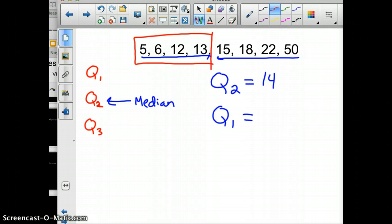Quartile 1 is going to be the median of this group of data. There's four pieces now, so you count in two and back two. Right in between 6 and 12 is quartile 1, which would be 9.